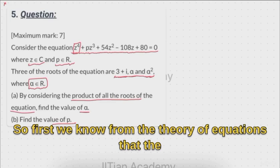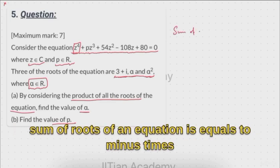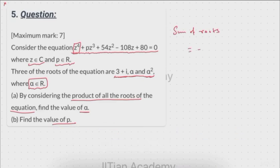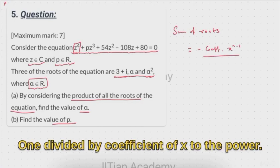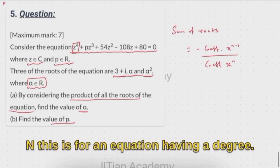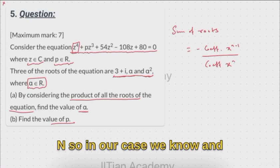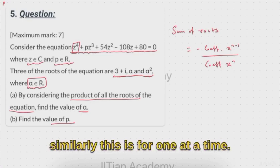...that the sum of roots is equal to minus times the coefficient of x to the power n minus 1, divided by the coefficient of x to the power n. This is for an equation having degree n, and this is the sum taken one at a time.